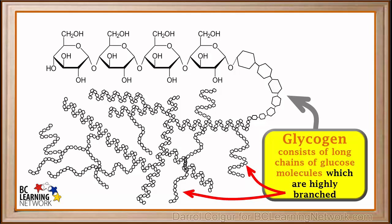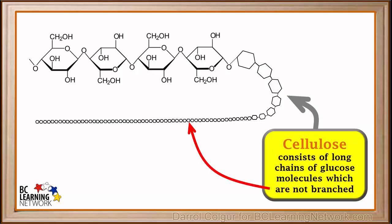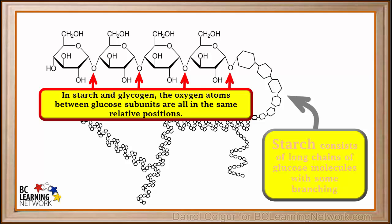A different type of polysaccharide called cellulose is produced in plants. Cellulose consists of long, unbranched chains of glucose units. Notice that the linkage between glucose units is different in cellulose than it is in starch or glycogen. In cellulose, the oxygen atoms between the glucose units alternate their positions, whereas in starch and glycogen, the oxygen atoms between glucose units are all in the same relative positions.